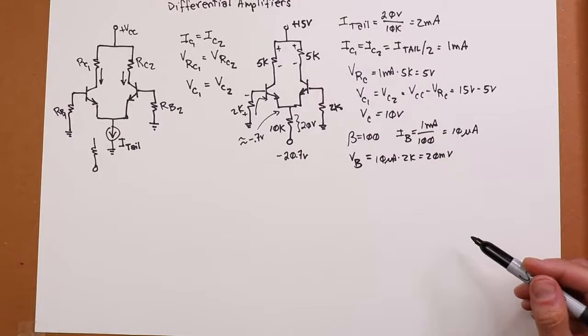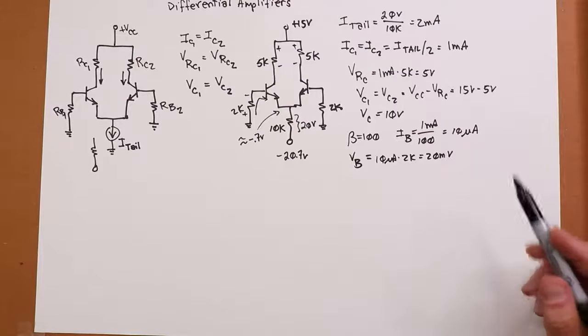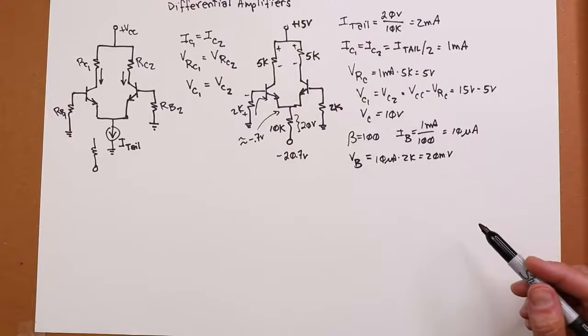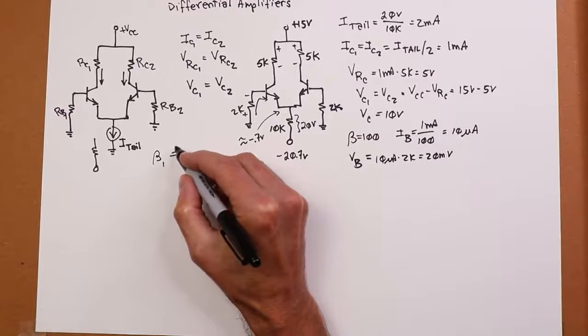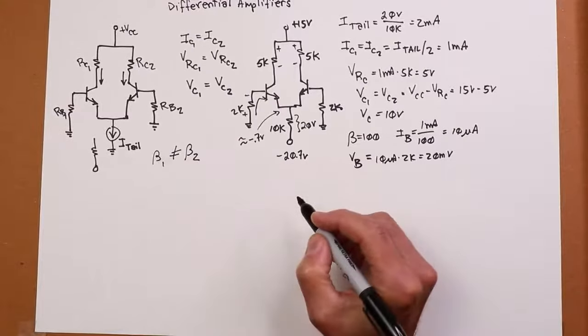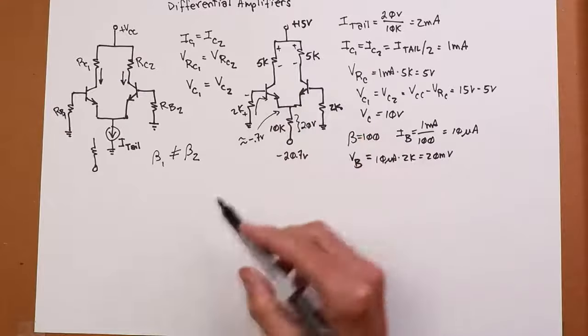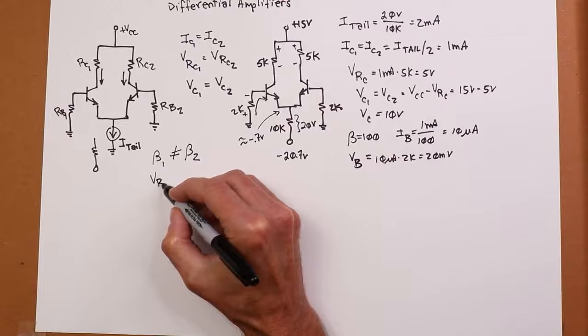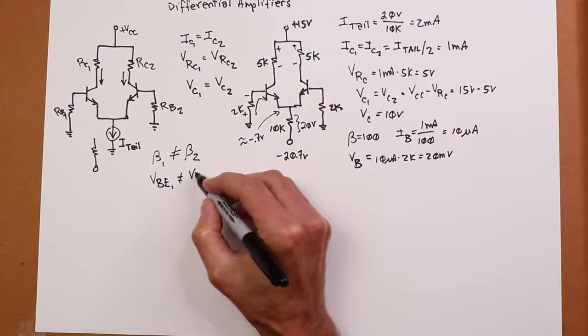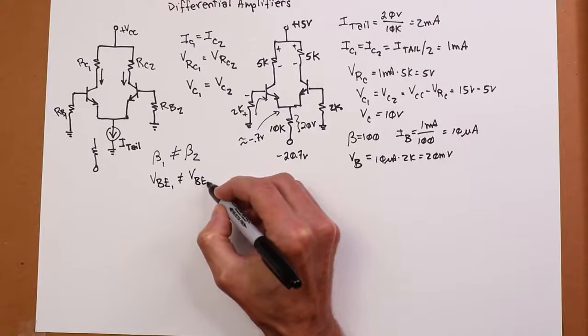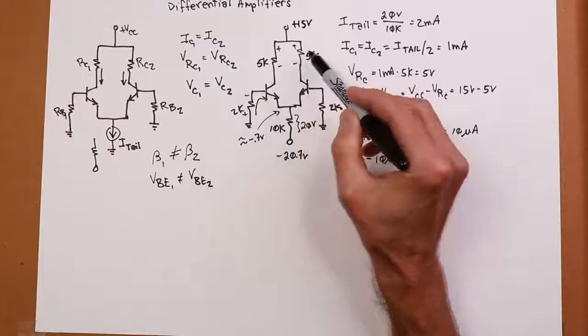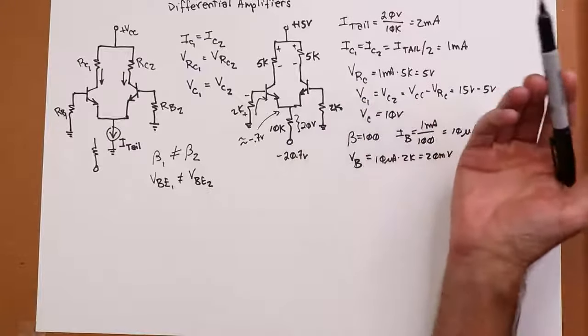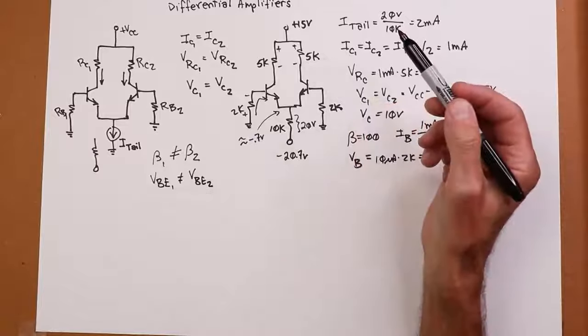So one definition of perfection is that which cannot be obtained. You will never have this thing be perfect. Possible error sources. Well, beta 1 is never going to be exactly the same as beta 2. The transconductance curves of these two transistors are not going to be identical. What does that mean, practically speaking? It means that VBE for number 1 is not going to be the same as VBE for number 2. What do you think the chances are that you would get the exact same value for the two collector resistors, or for the two base resistors? It's not going to happen. Slight variations are going to occur.